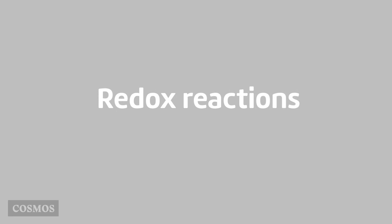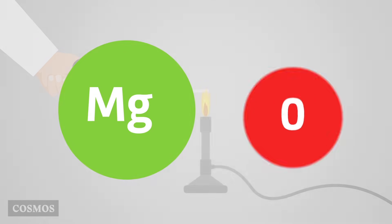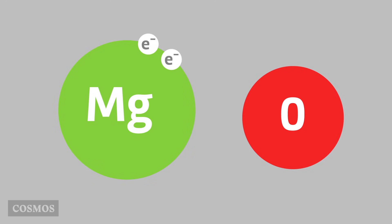Redox Reactions. When magnesium combines with oxygen to form magnesium oxide, electrons on the magnesium atoms are more strongly attracted to the oxygen atoms than they are to their own nuclei, so they swap over, creating two ions.